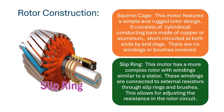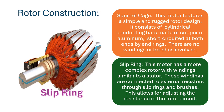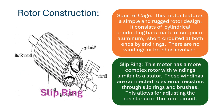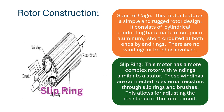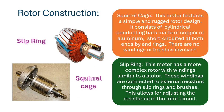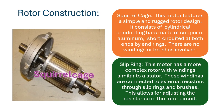Slip Ring: this motor has a more complex rotor with windings similar to a stator. These windings are connected to external resistors through slip rings and brushes. This allows for adjusting the resistance in the rotor circuit.